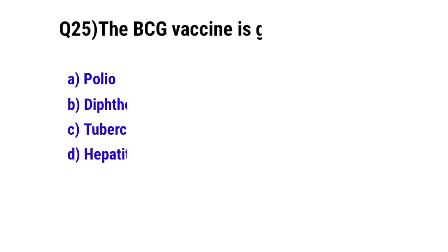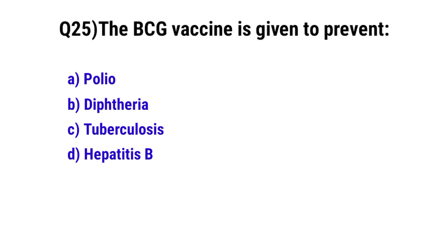Question No. 25. The BCG vaccine is given to prevent? The correct option is C. Tuberculosis.